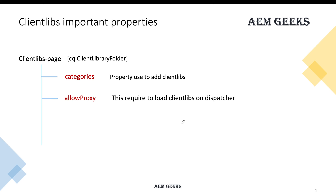The 'allowProxy' property is mandatory since AEM 6.3 or 6.4. It is a boolean property and should always be set to true. If you don't give this property or if it does not have a value of true, your client library will not load on your dispatcher. You will see the client library in author, but it will not load on your publish or dispatcher.